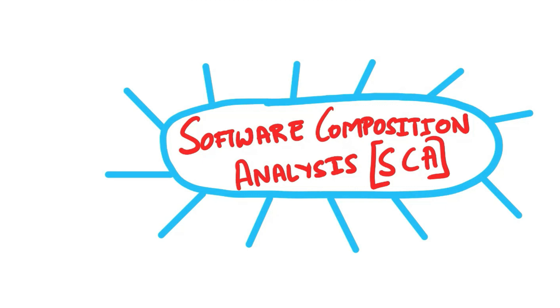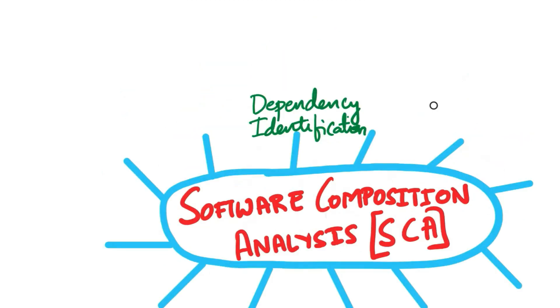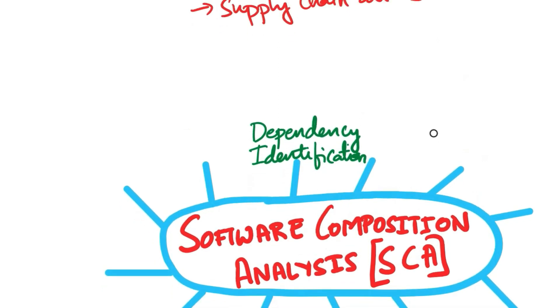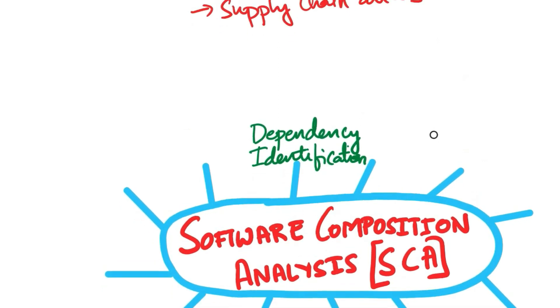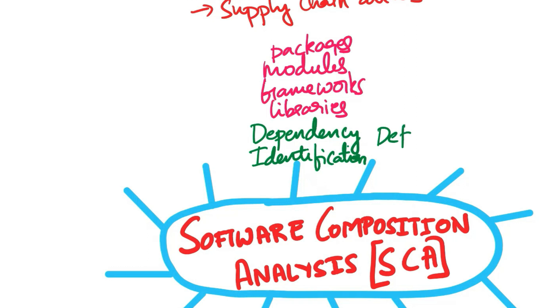First is dependency identification. So, the SCA process begins with the identification of all third-party dependencies in the software project. This includes libraries, frameworks, modules, and packages used in the code base.